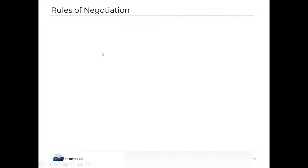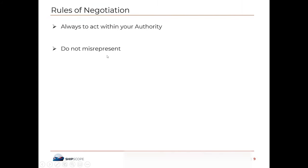Rules of negotiation: always act within your authority. This means ship brokers should make sure that they have explicit rights from their principals to negotiate. There have been many instances where ship brokers have tried to put up their vessels or cargo and started negotiating even though they didn't have explicit rights from their principals. Just make sure that you have consent from them and do not misinterpret.